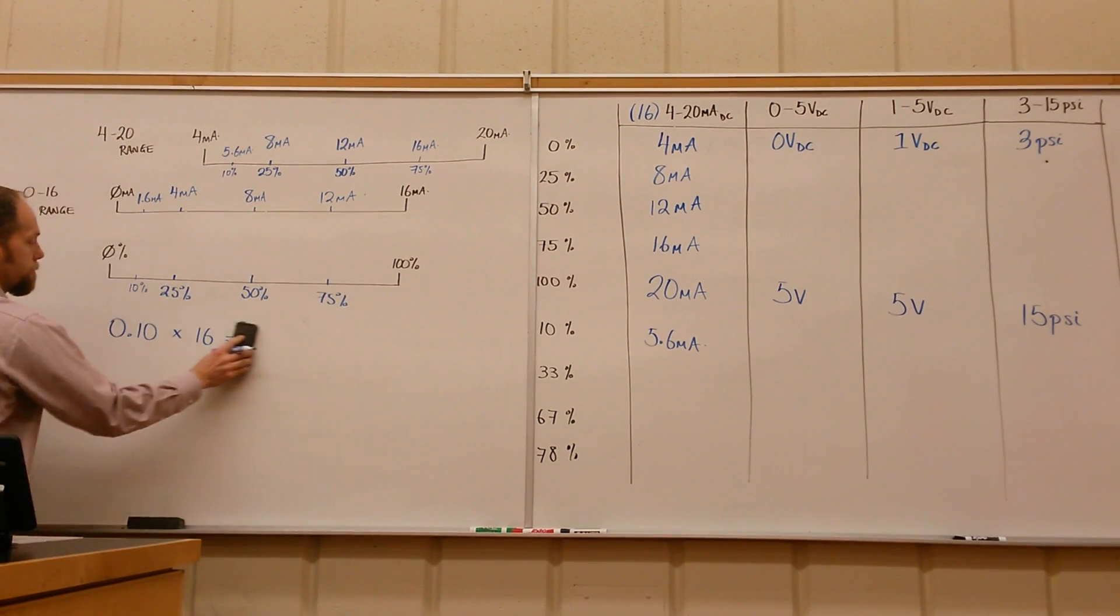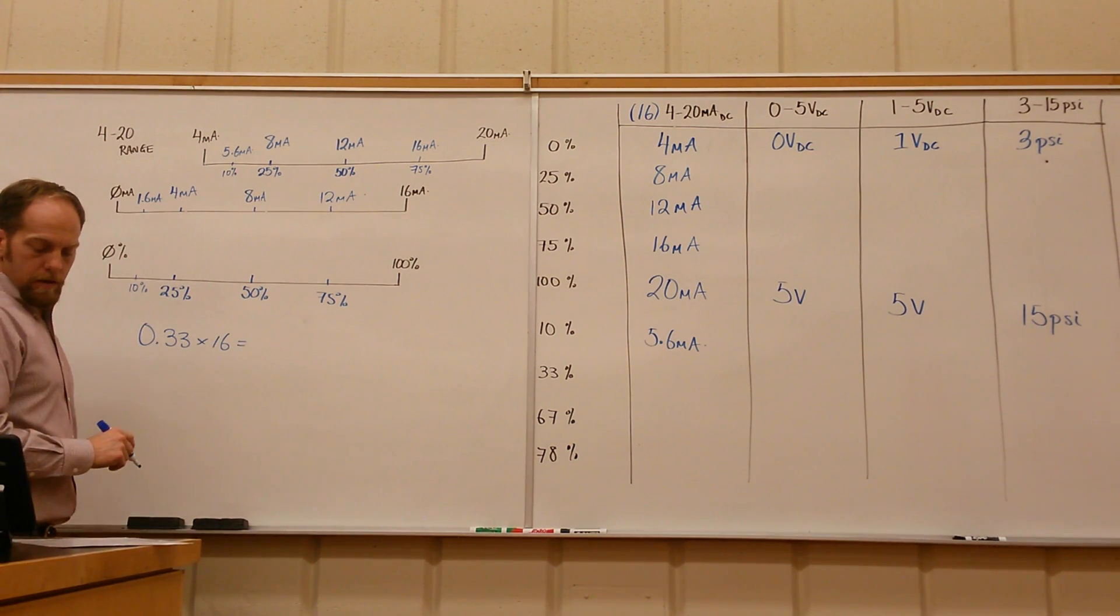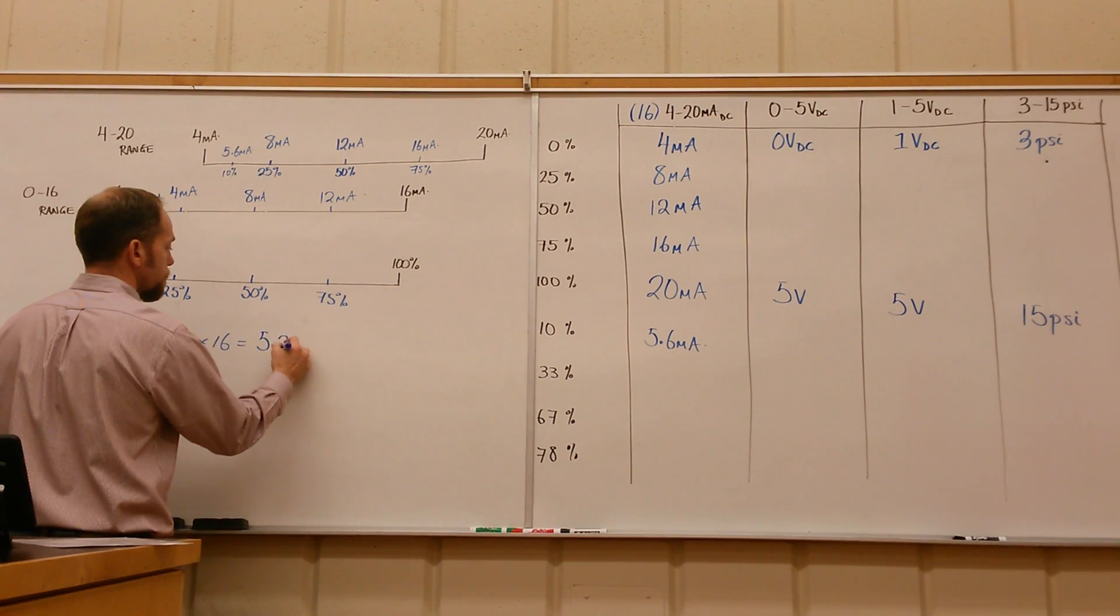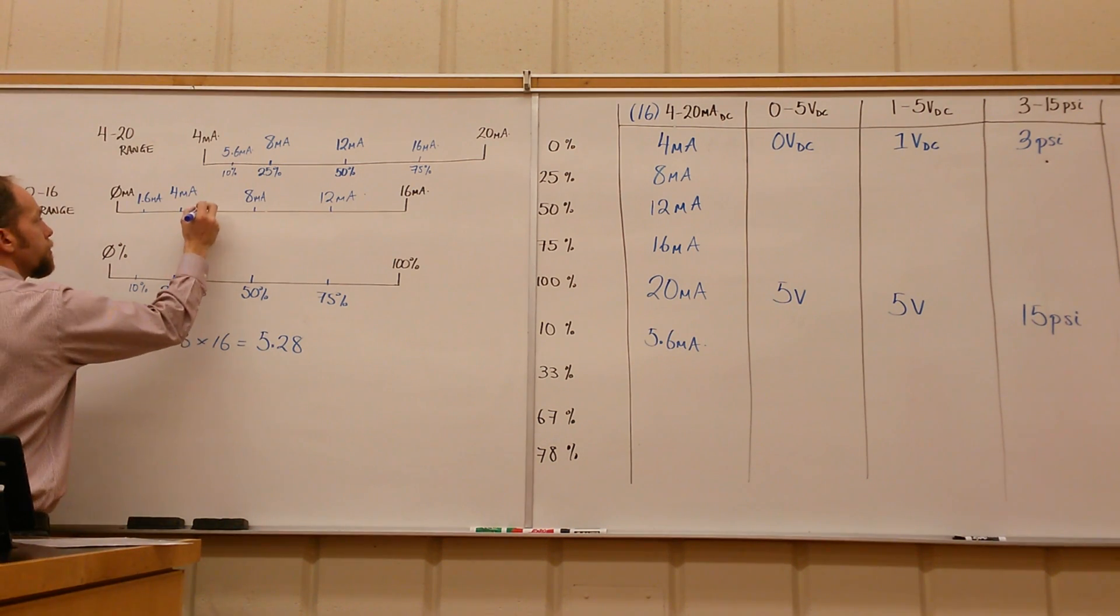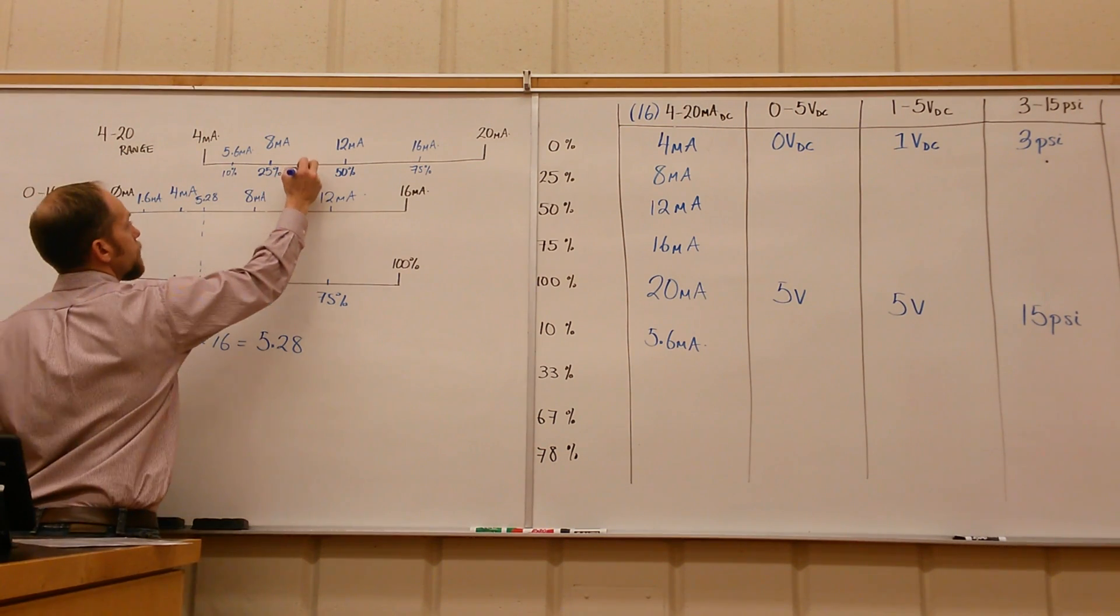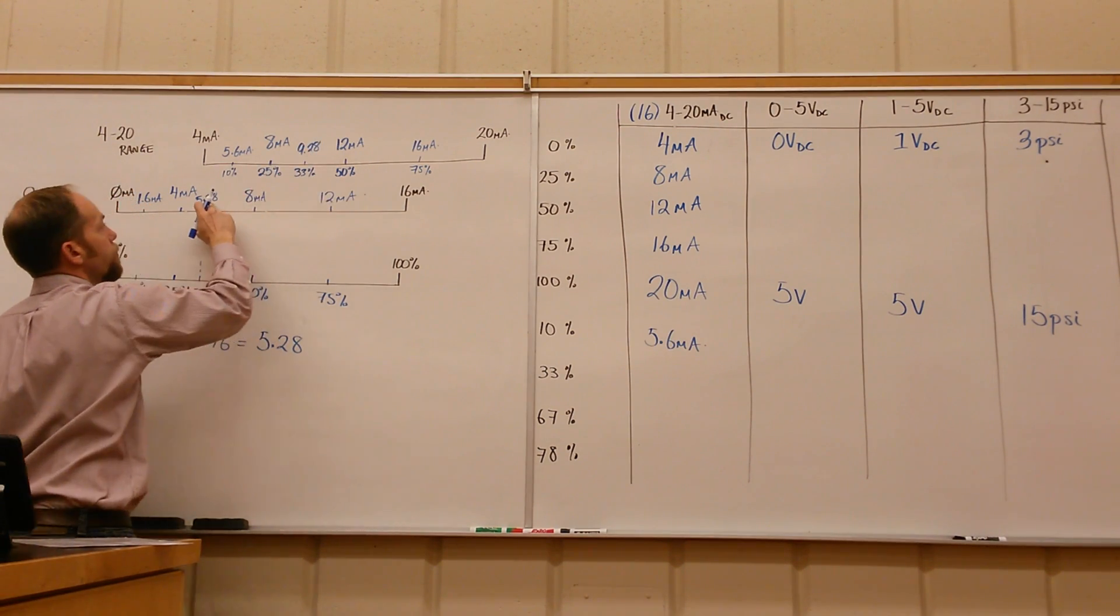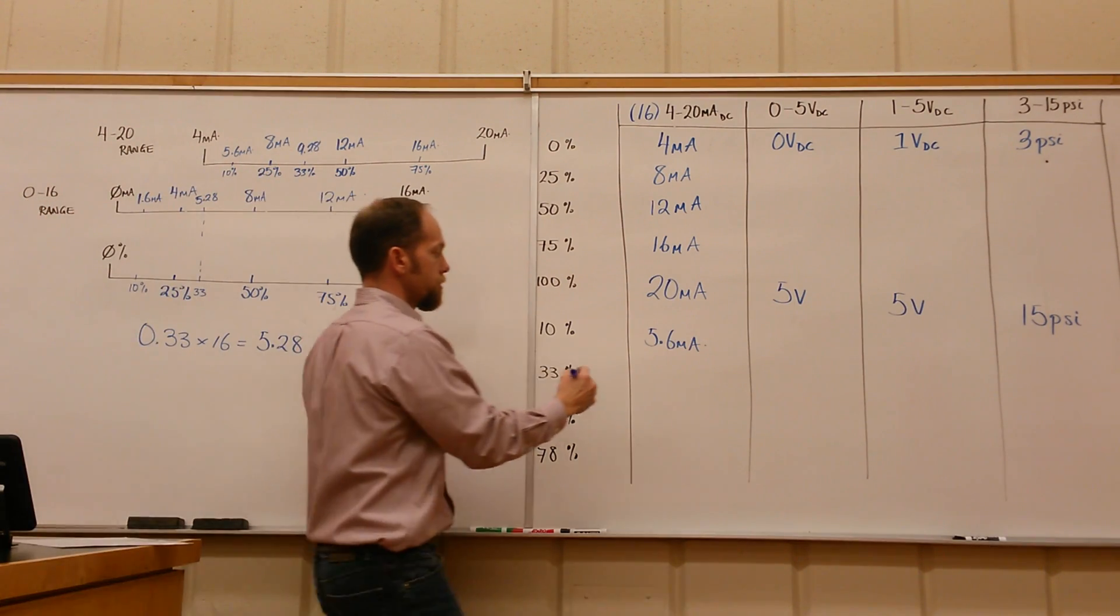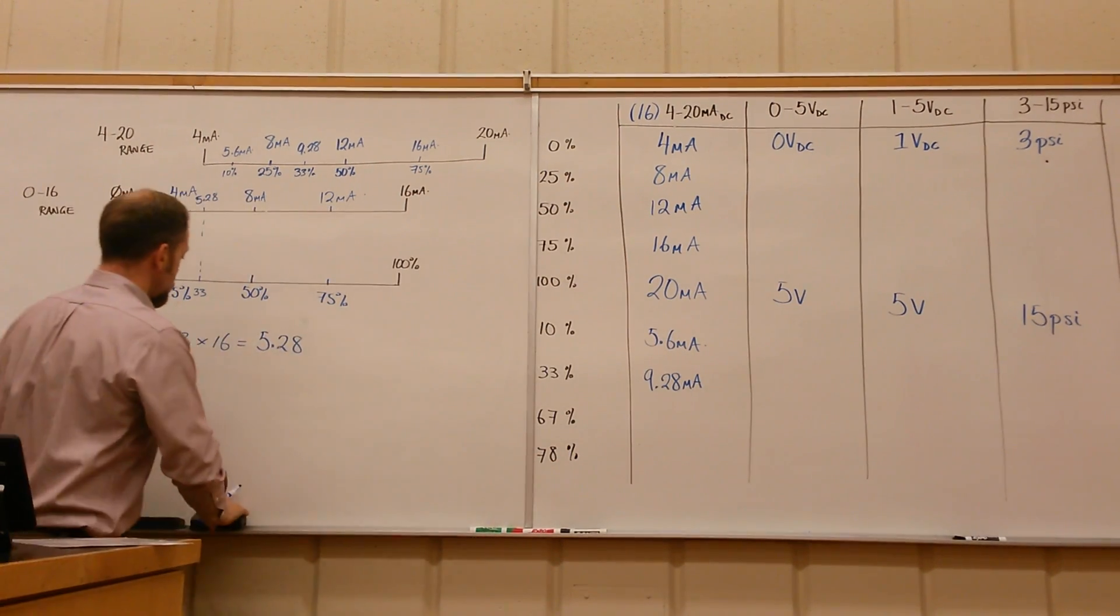For the 33%, again we'll take 33% of 16, and that gives us 5.28. So 33%, if we follow that up, gives us 5.28 milliamps on the 0 to 16. Then again, we've got to add 4, so 33% here is going to give us 9.28 milliamps.